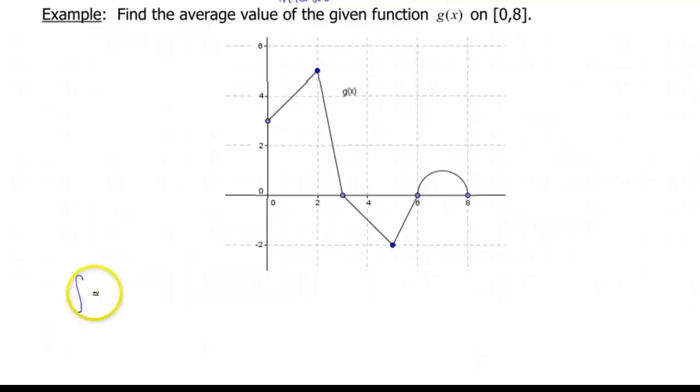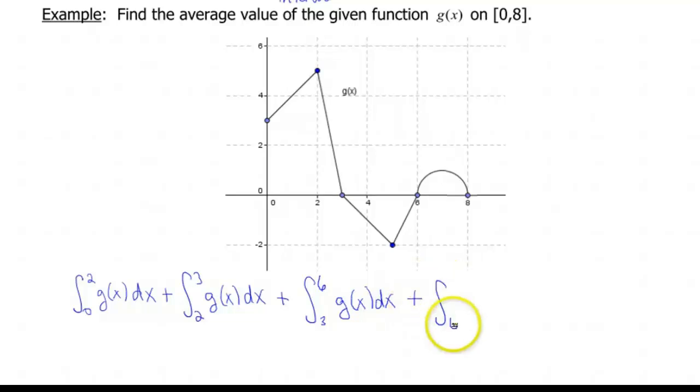So we broke this integral up into three pieces, or no I'm sorry, more than three pieces, four pieces. We're gonna go from 0 to 2 of our function g(x) dx. Then we're gonna go from 2 to 3 of our function. And then we're gonna do the integral from 3 to 6 of our function. And then we're gonna do the integral from 6 to 8 of our function. And the good news is then this gives us the overall integral from 0 to 8 of our function, which is really what we want. So that's our one piece of our average value function that we need.